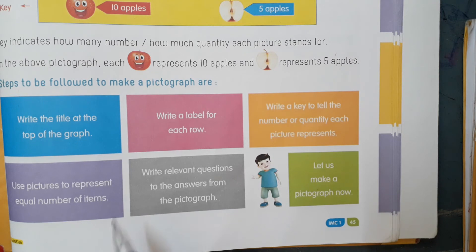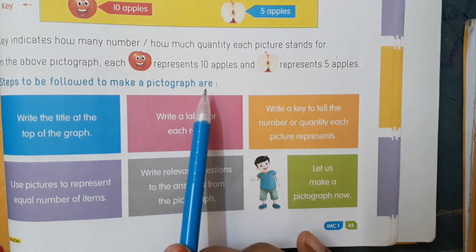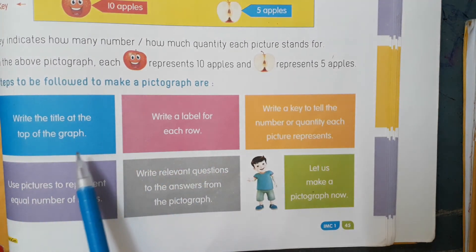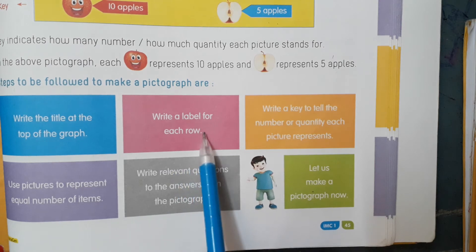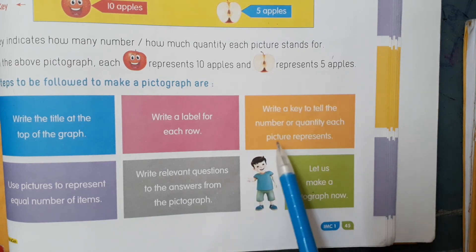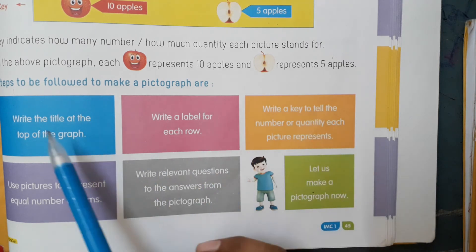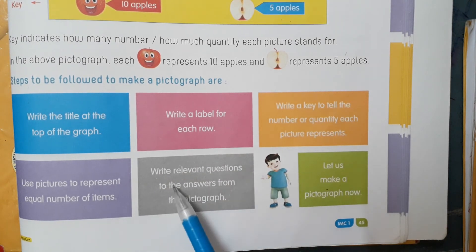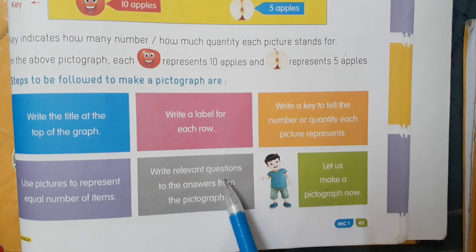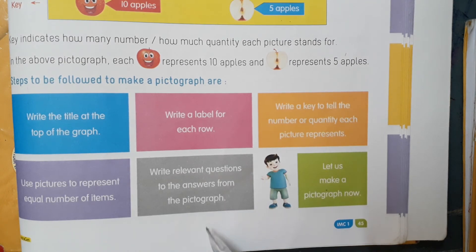Steps to be followed to make a pictograph: write the title at the top of the graph; write a label for each row; write a key to tell the number or quantity each picture represents; use pictures to represent equal number of items; and write relevant questions with answers from the pictograph. Let us make a pictograph now.